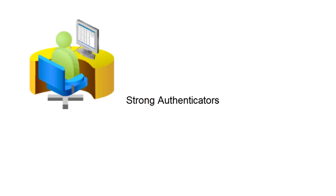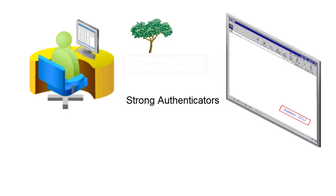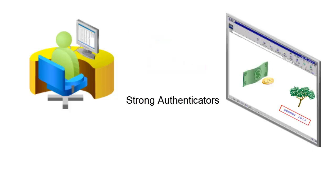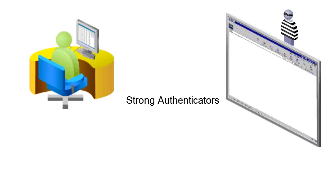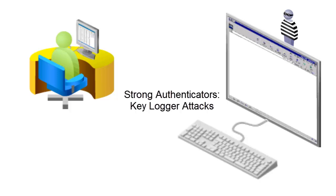Besides username and password credentials, there are more secure ways of handling authentication called strong authenticators. When I do online banking, I want to ensure that I'm talking to my bank. When I register an account, they say to pick an image and a phrase that goes with that image, and that image appears on the password page. When I want to log in, if I don't see my selected image and phrase on the password page, I should not log into that website because it means somebody else is trying to be my bank. Another example for strong authentication is keylogger attacks — keyloggers record your keystrokes and play them back to find your password.